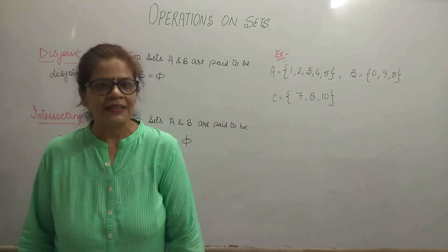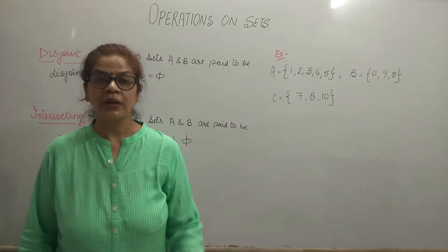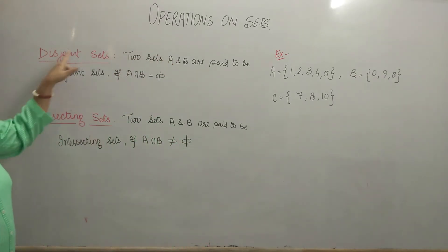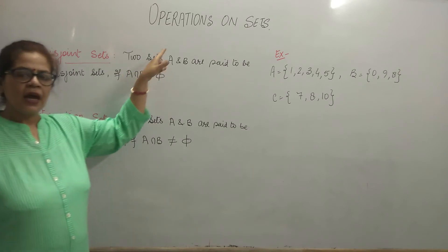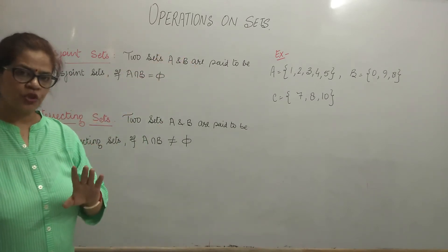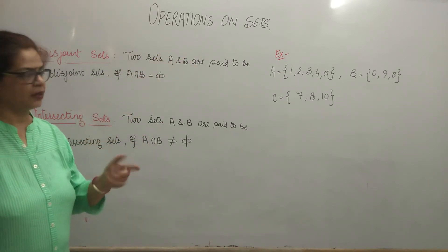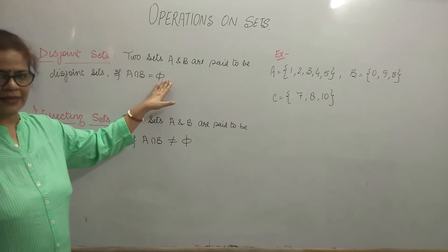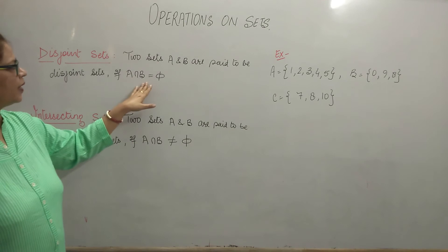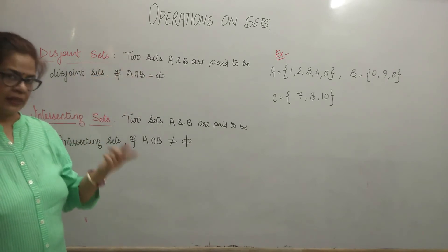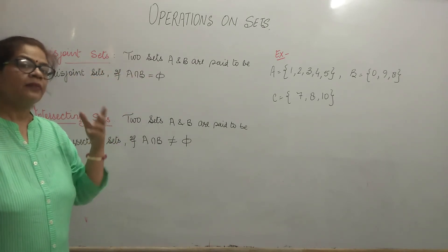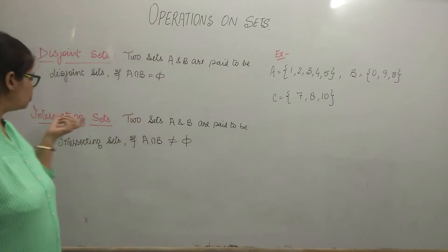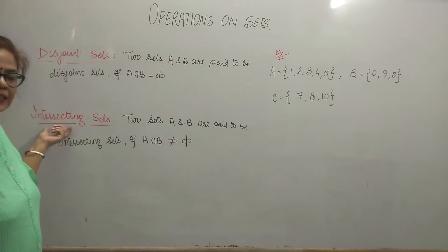Now let us understand two more terms related to sets. Number one is disjoint sets. Two sets A and B are said to be disjoint if they have nothing in common. That is, if A intersection B is equal to phi or null set, then these two sets A and B are said to be disjoint. If they have something common, then these two sets are known as intersecting sets.